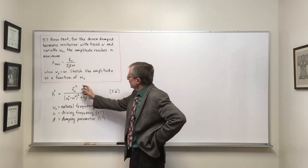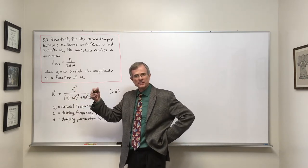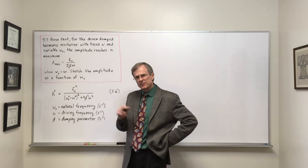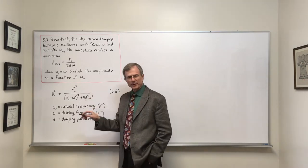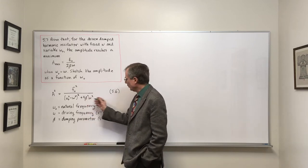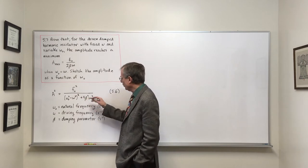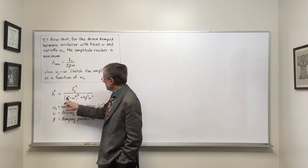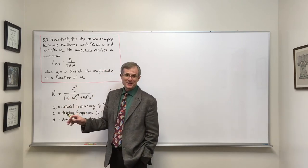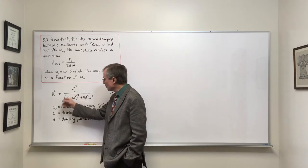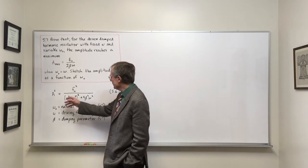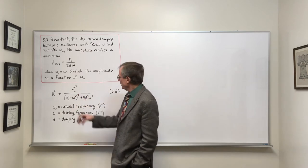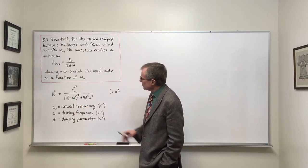It's easy to see from the expression: the numerator A-squared is f-naught squared, a positive number. The denominator has two terms, both positive or zero. The term with four beta squared omega squared is a perfect square, so it's always non-negative. The other term, omega naught squared minus omega squared, is also a square, so it's always non-negative regardless of the sign inside the parentheses.